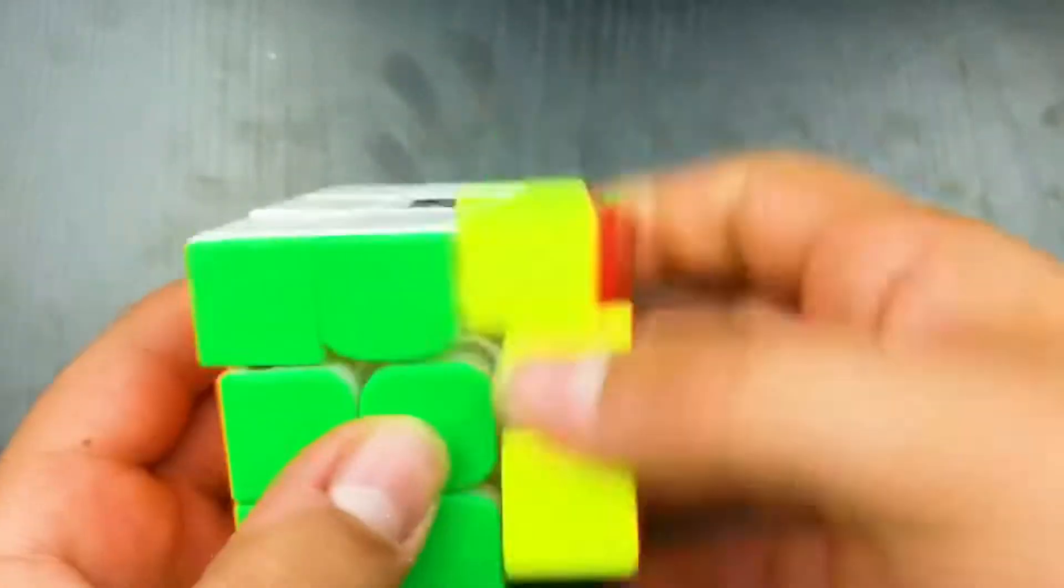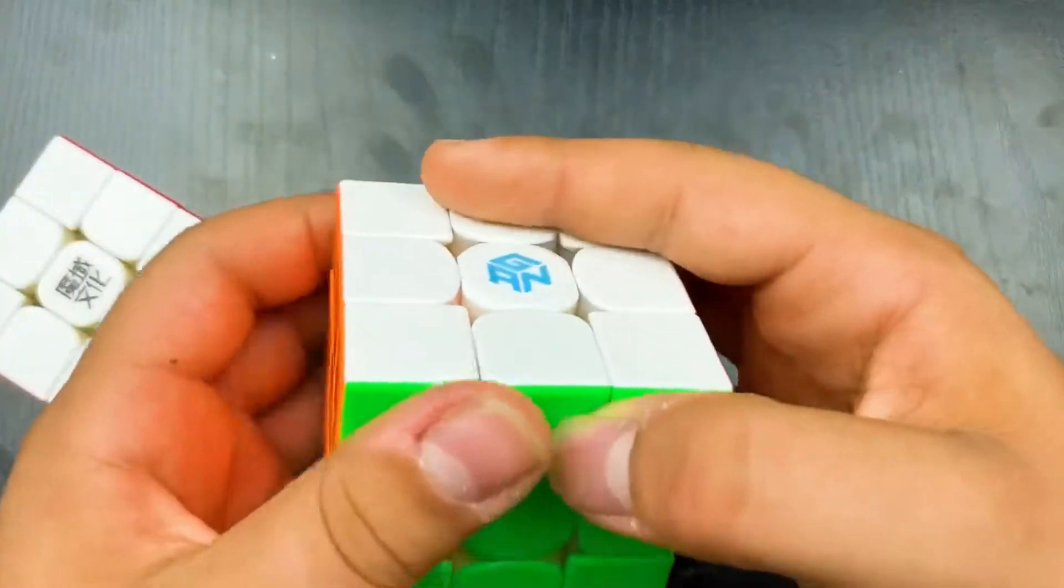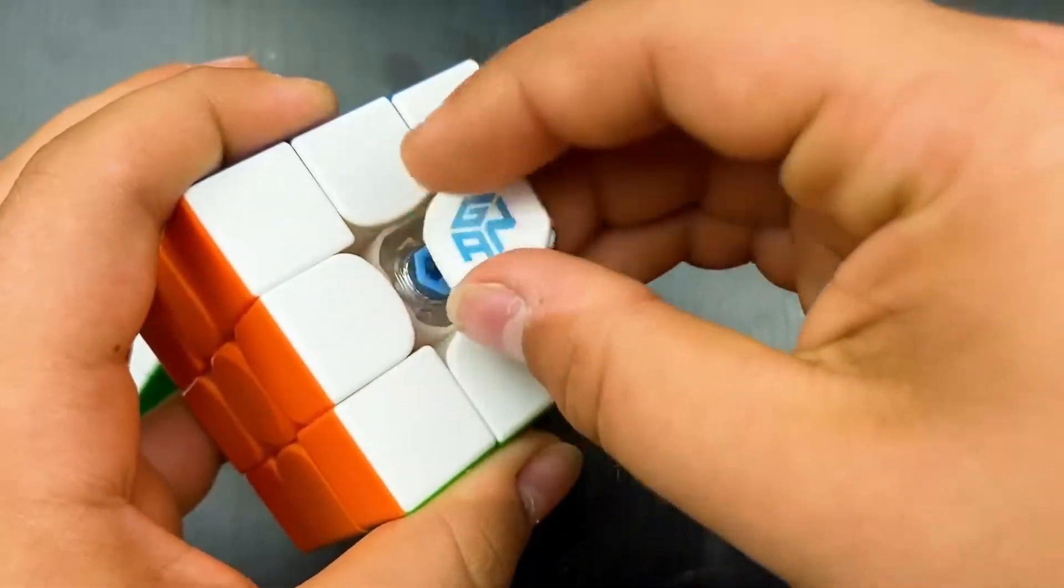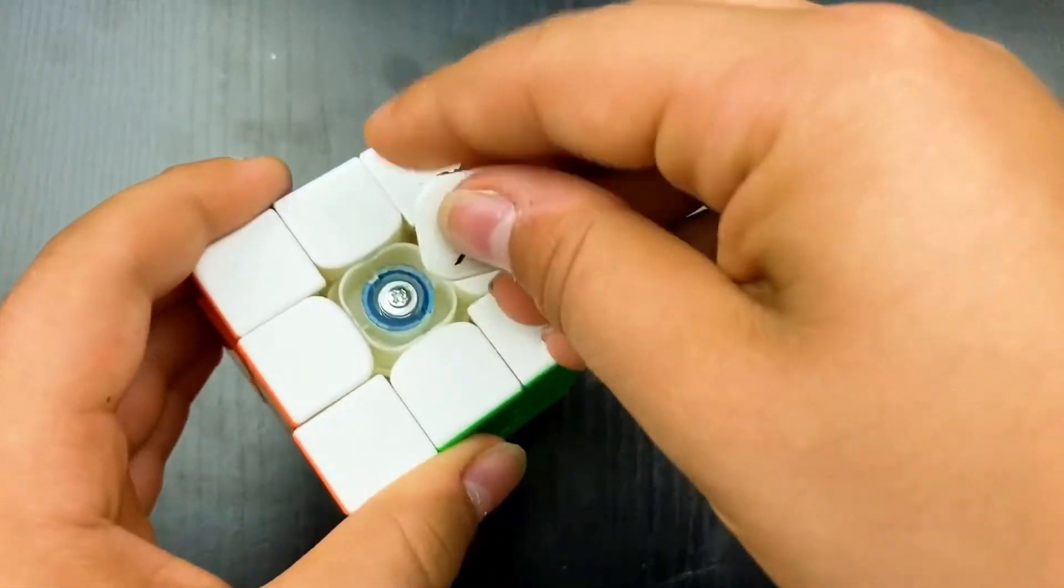Now one thing I definitely do like better about this cube versus the 11M Pro is a minor thing, but the center caps on this cube are just impossible to get off. It just hurts your hands and they're even worse to get back on. But this cube, even though the center caps aren't great, they're still a lot easier to get off.